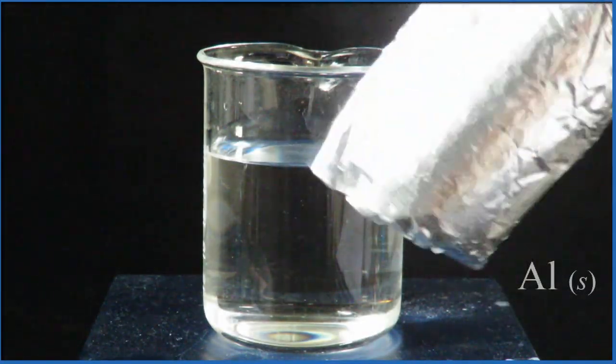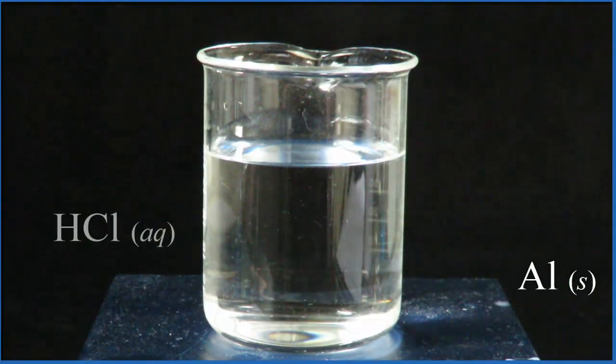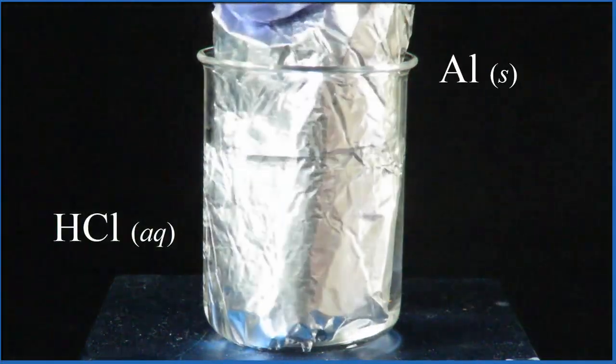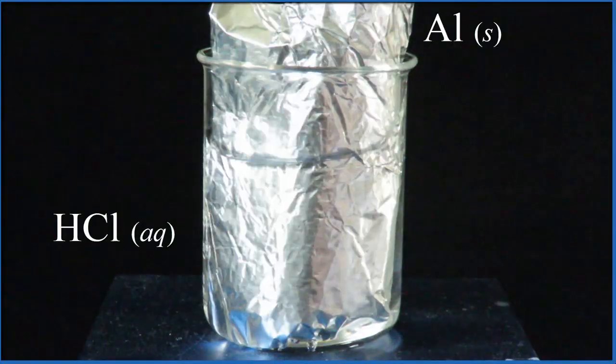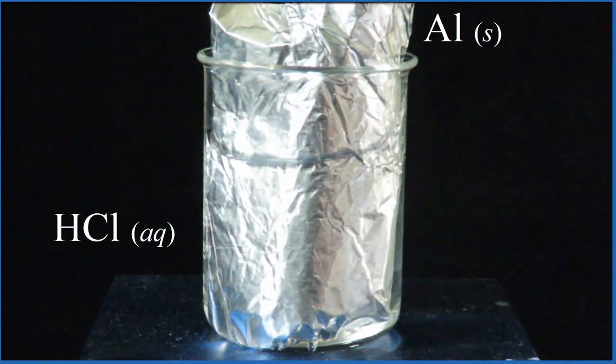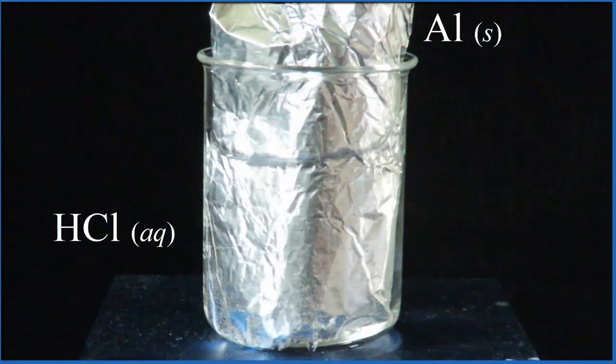Let's put some aluminum in hydrochloric acid - concentrated hydrochloric acid. We have aluminum foil, which is solid aluminum, and then we have hydrochloric acid which is concentrated but aqueous because there's still some water in it.